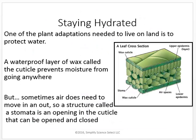One of the plant adaptations needed to live on land is to protect water — it's one of the things we need to maintain for homeostasis. One adaptation is a cuticle layer: a waterproof, waxy coating on the surface. Some plants have more or less of it depending on their environment. Desert plants like cactus or aloe vera have very waxy outsides because they really need to protect their water supply.